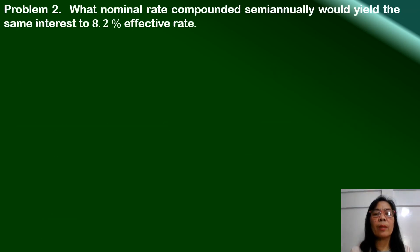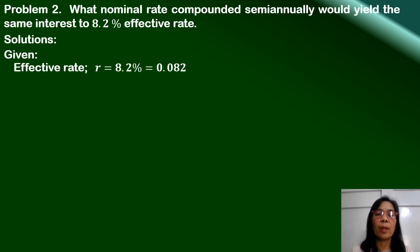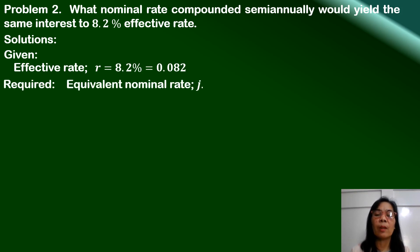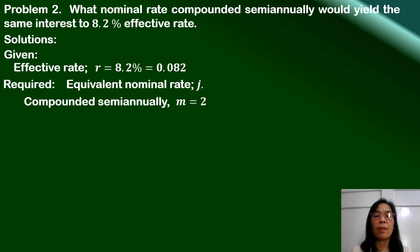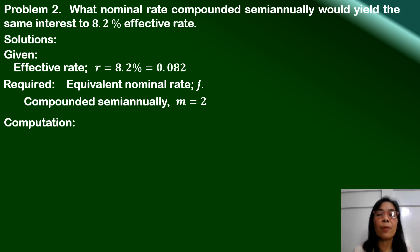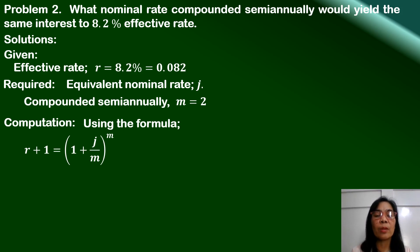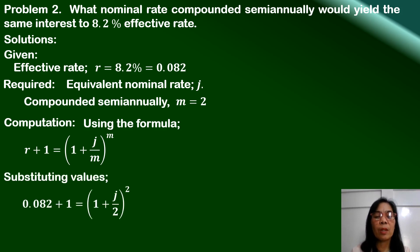Next problem: What nominal rate compounded semi-annually would yield the same interest as an 8.2% effective rate? We are given R equals 8.2% or 0.082, and we need to find the equivalent nominal rate J compounded semi-annually, so M equals 2. Using the derived formula R plus 1 equals (1 plus J over M) raised to M, substituting: 0.082 plus 1 equals (1 plus J over 2) squared.